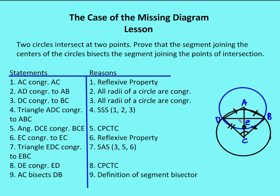And I'm going to say EC is congruent to itself. Now I have two triangles — EDC and EBC — that are congruent by side-angle-side. Then I can say that DE is congruent to EB by CPCTC. And then I say that AC bisects DB — that's the definition of a segment bisector.